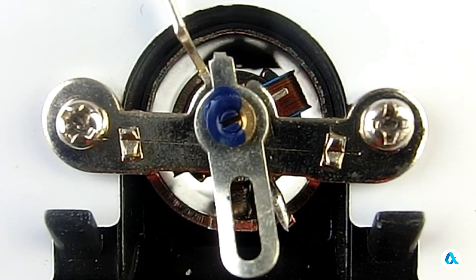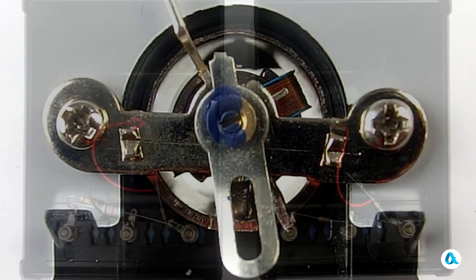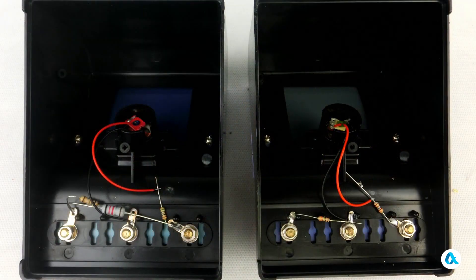So, both instruments in their physical essence measure electric current and are ammeters. But then, how do they differ from each other?